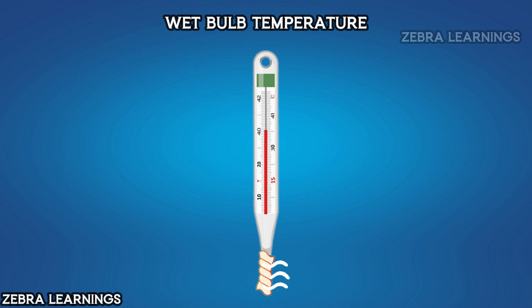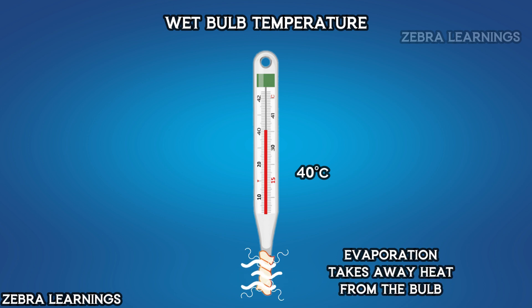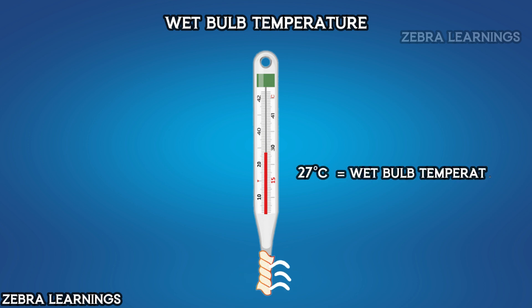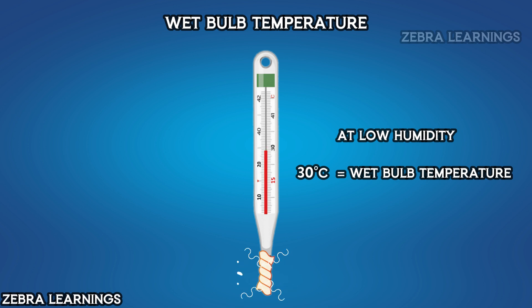The mercury will expand to the same temperature as the air. However, when water evaporates, it takes away some heat, so it removes some heat from the bulb. The removal of heat causes the bulb's temperature to decrease, and this temperature reading is the wet bulb temperature. When humidity is high, less water evaporates, so less heat is removed from the bulb, resulting in a higher wet bulb temperature. When humidity is low, more water evaporates, so more heat is removed from the bulb, resulting in a lower wet bulb temperature.